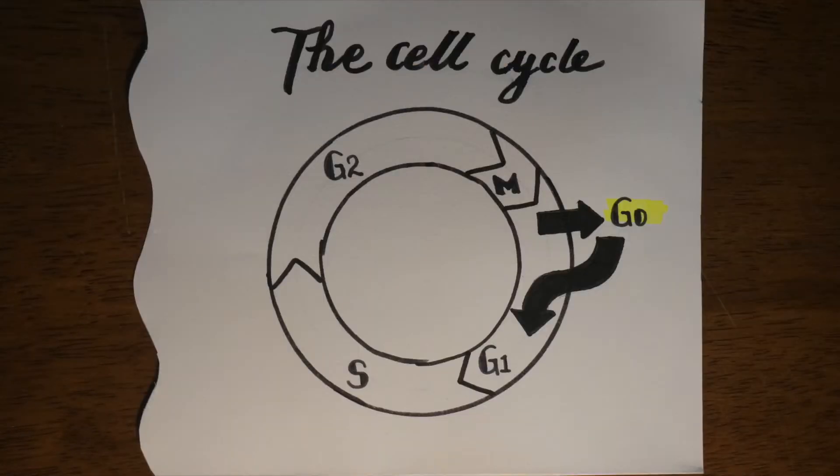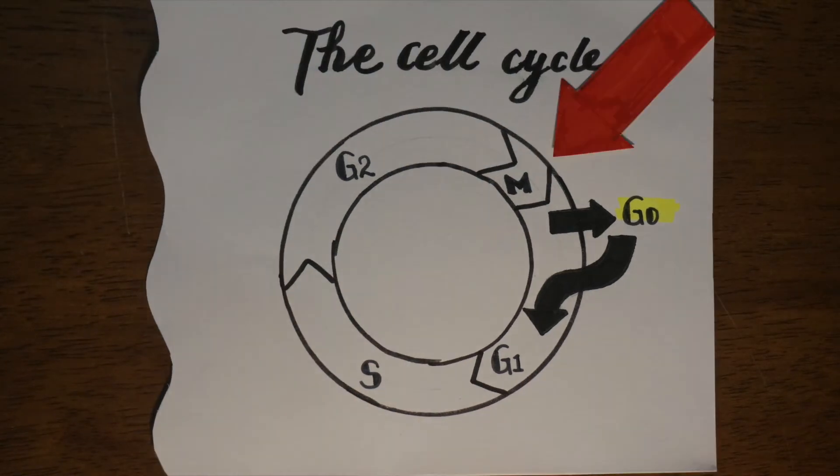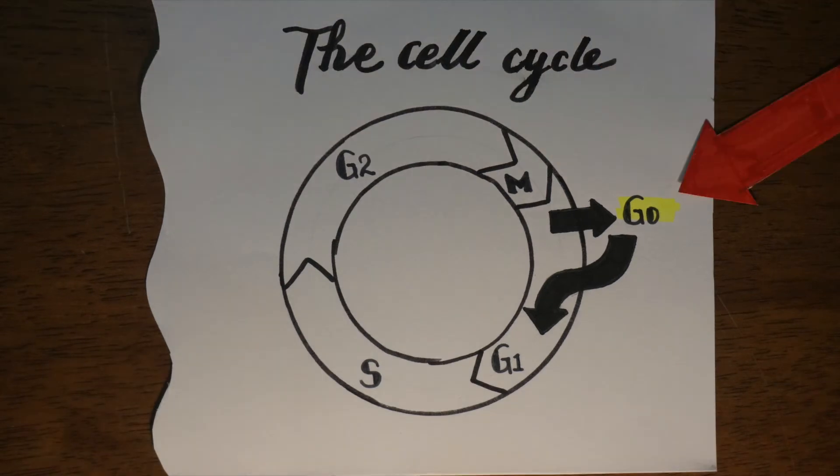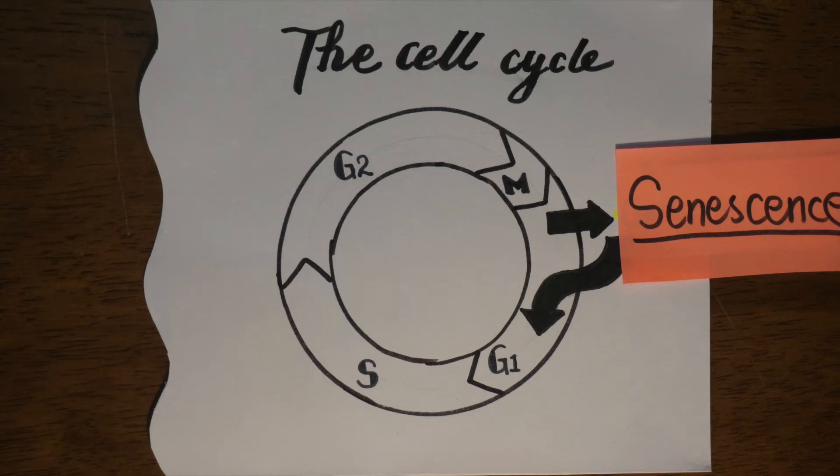To better understand the importance of telomeres, we first need to talk a bit more about the cell cycle. The cell cycle itself is made up of five phases. G1, S, G2, and M phase make up the growth component of the cycle. And in the phase G0, cells are in senescence or are terminally differentiated.